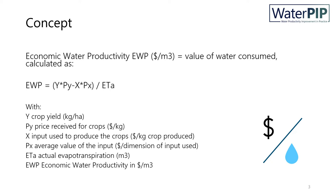This approach, known as the residual method, relies on the principle that the value of a good — its price times its quantity — is equal to the sum of the quantity of each input multiplied by its average value. The value of the consumed water, also known as the value of water or the net return to water, can then be calculated if the other inputs, outputs, and their values are known.